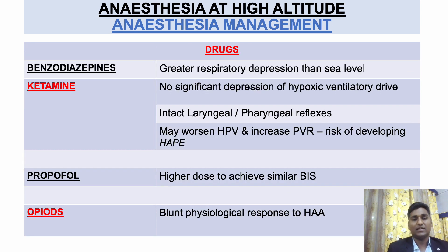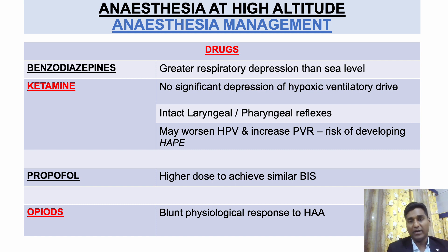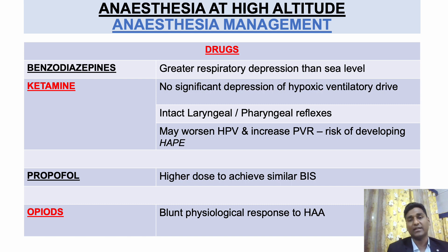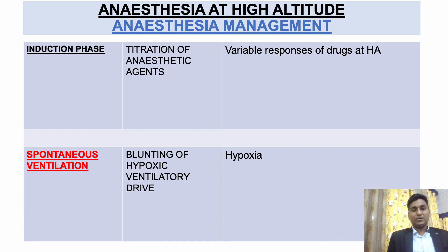Regarding specific anesthetic drugs: benzodiazepines have greater respiratory depression at higher altitude than at sea level. Ketamine has no significant depression of hypoxic ventilatory drive but might worsen HPV and increase PVR — the risk of pulmonary edema increases; however it is safer in field setups where intact laryngeal/pharyngeal reflexes and airway are maintained. Propofol may require higher doses to achieve similar effect. Opiates used in post-op analgesia can blunt the physiological response to high altitude. Due to variable drug response, titrate agents during induction. Patients on spontaneous ventilation risk hypoxia due to blunted hypoxic ventilatory drive.